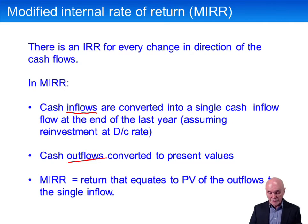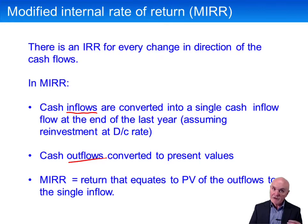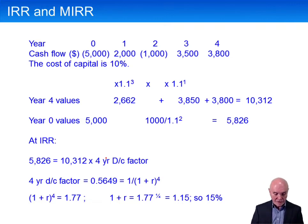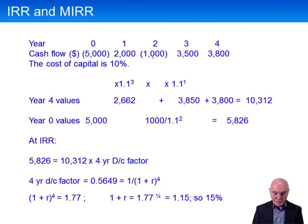Let's see a very simple example. This is not the example in your notes — I'm leaving that for you to try yourself, and the answer is in the back of the notes. Here we have the cash flows at times 0 to 4: negative, positive, negative, positive, positive — a very eccentric sort of a cash flow. The cost of capital is 10%.